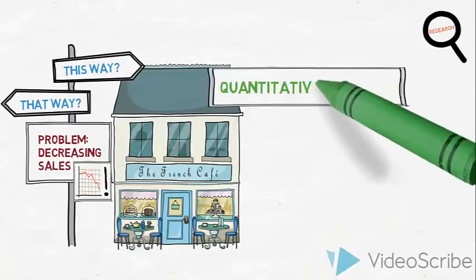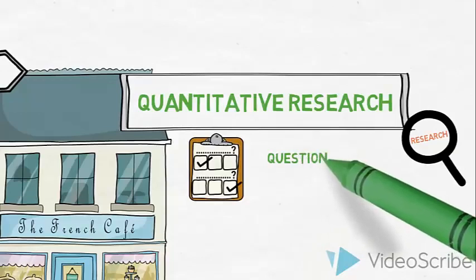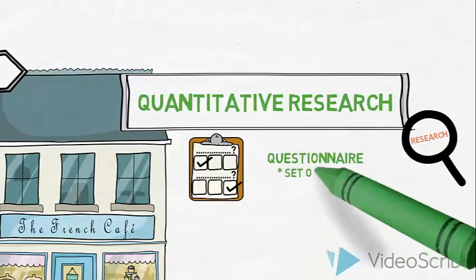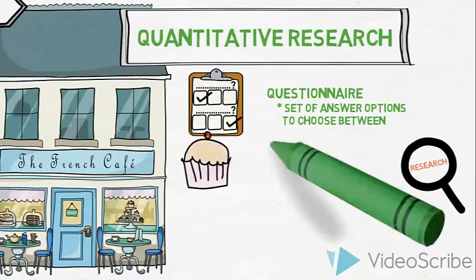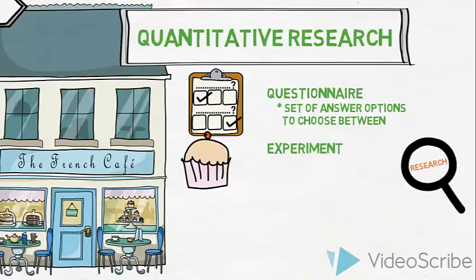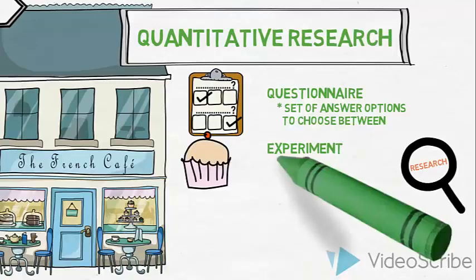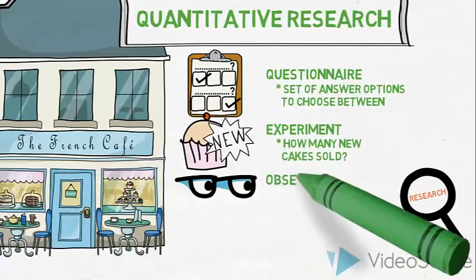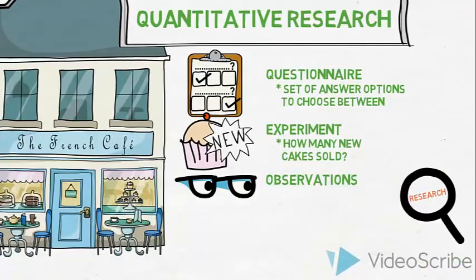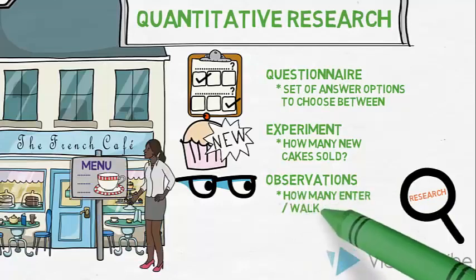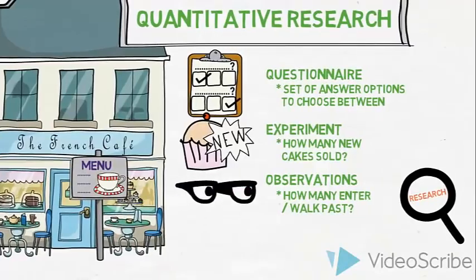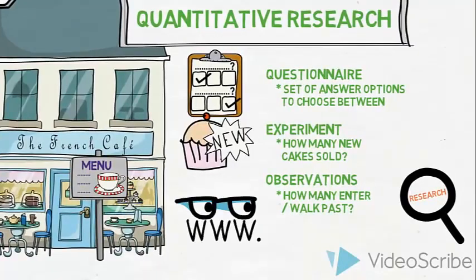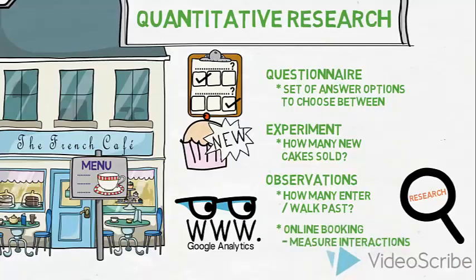Now let us introduce a few types of quantitative research. The French Café could design a questionnaire with a set of predefined answers for the respondents to choose between — for example, asking respondents to indicate to what extent they are satisfied or dissatisfied with the service. They could also carry out an experiment, testing customers' reaction to the launch of a new cake and measuring how many are sold. And they could carry out a structured observation — for example, counting how many customers stopped to look at the menu outside the café and how many chose to enter or walk away. Similarly, they could use Google Analytics to observe online behaviour, such as measuring interactions with the book-a-table feature on their website.